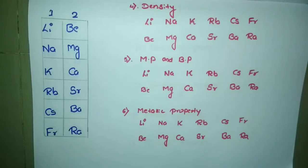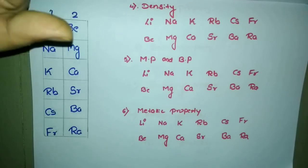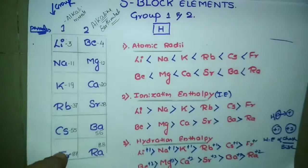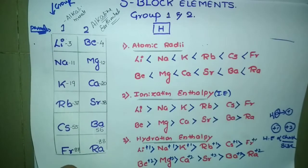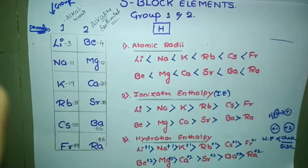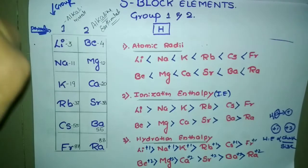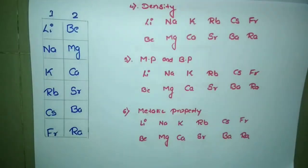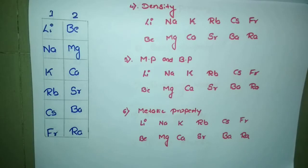Hello, dear students. This is the next part of the periodic trends where we were discussing the periodic trends of the s-block elements. We have completed three properties: atomic radius, ionization enthalpy, and hydration enthalpy, how they vary down the group, and information regarding group 1 and group 2 — why they are called alkali metals and alkaline earth metals. Now let us move to the next trends: density, melting point, boiling point, and metallic properties.